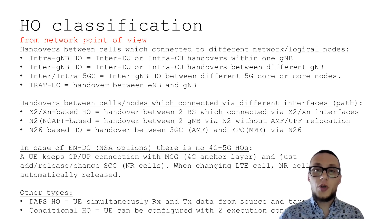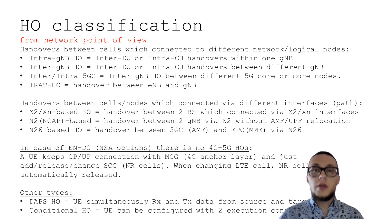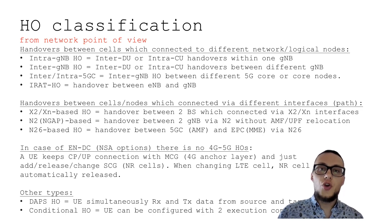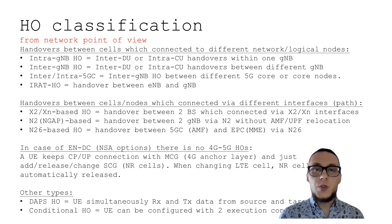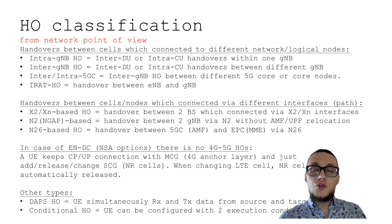It is also possible to have handovers between different technologies, which we may call IRAT handovers — for example, a handover between a 4G eNodeB and a 5G gNodeB, which will involve different procedures between cores. Handovers can also be classified from an interfaces point of view. For example, if XN or X2 interfaces are involved, we may call them XN-based or X2-based handovers. If there is a handover between two different cores — between a 4G core and a 5G core — we may call it an N26-based handover, because N26 is the interface between 5G AMF and 4G MME.